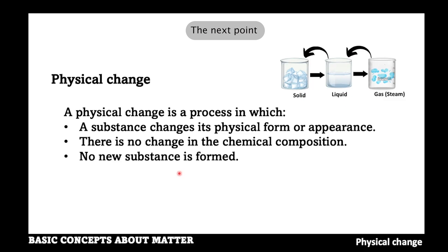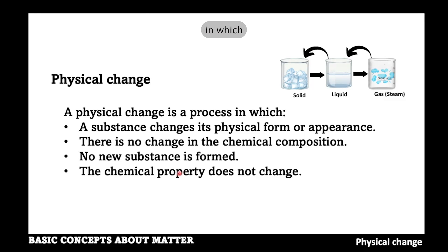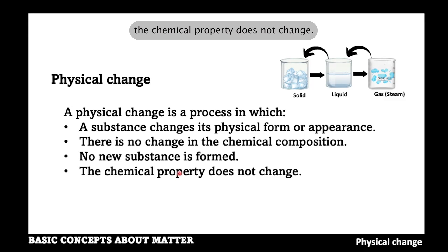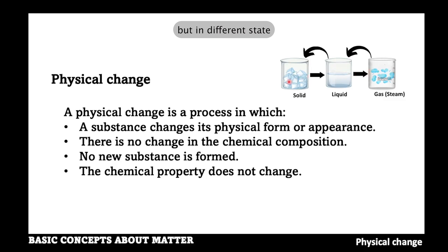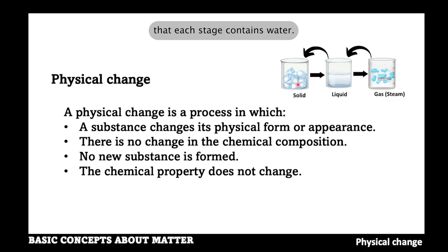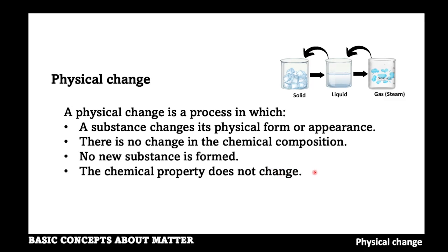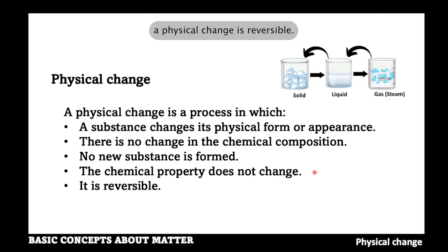A physical change is also a process in which the chemical property does not change. Each stage contains water but in different states. The litmus paper test confirms that each stage contains water, so the chemical property does not change. Finally, a physical change is reversible in the sense that the starting materials can be obtained again.